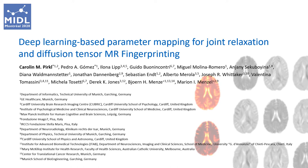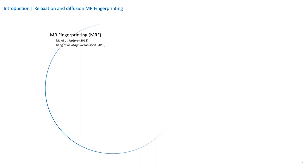Hello everyone. My name is Karolin Pirke and I'll present our work on deep learning-based parameter mapping for joint relaxation and diffusion tensor MRF fingerprinting. MRF offers fast and simultaneous quantification of multiple tissue parameters, and recently proposed diffusion-weighted MRF schemes successfully extended the initial concept to the estimation of the mean diffusivity.